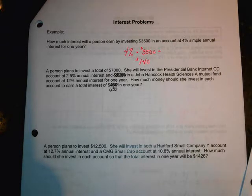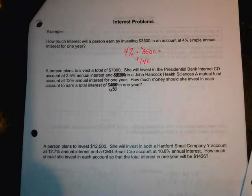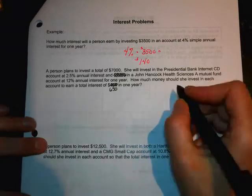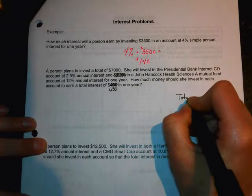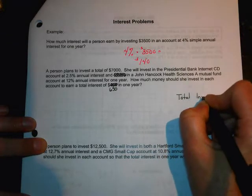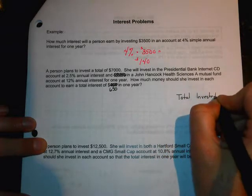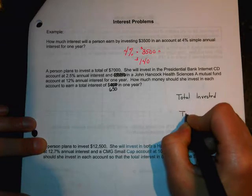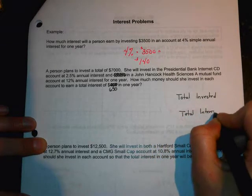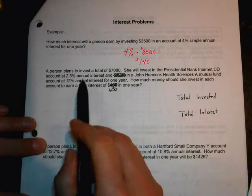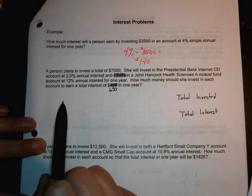We have a person that's going to invest a total of $7,000. So, we're going to have two totals equations again. We're going to have a total amount invested, and we're going to have a total amount in interest.